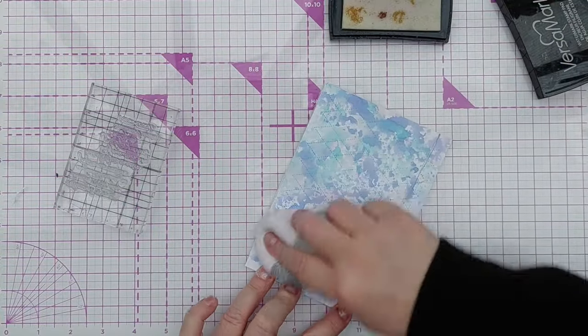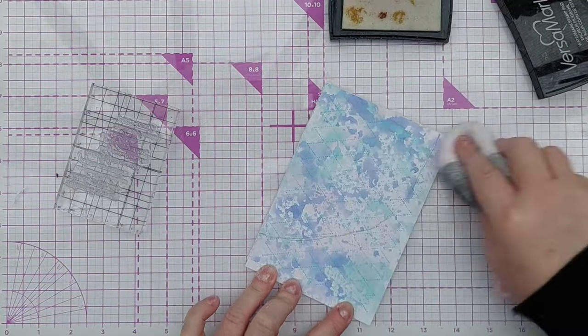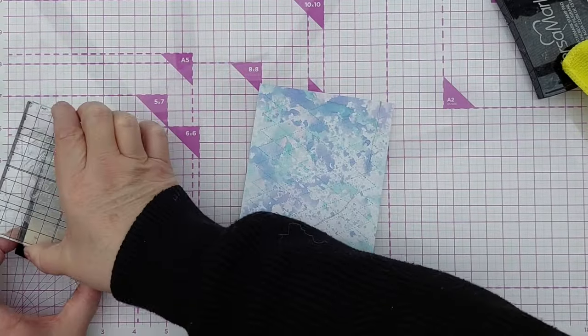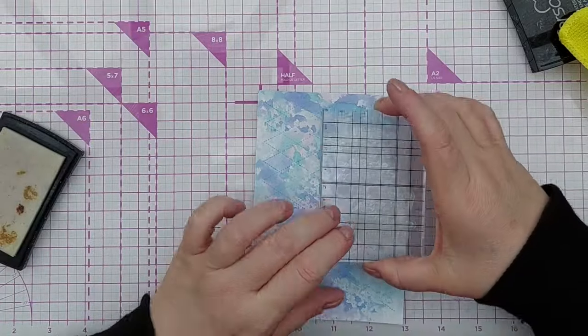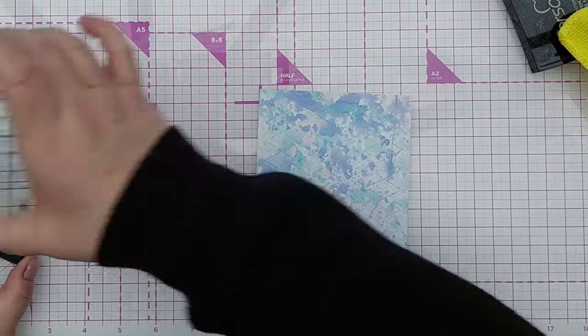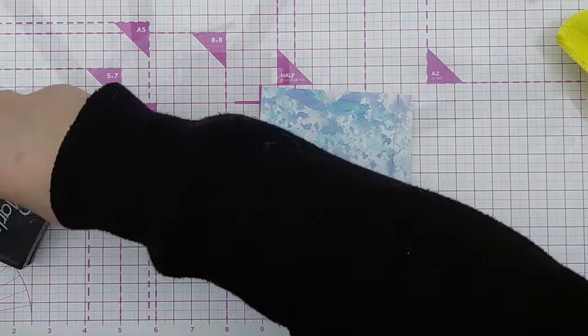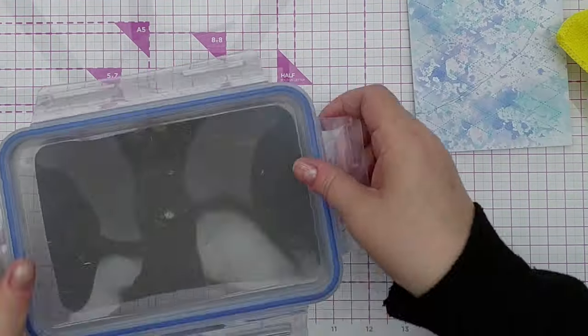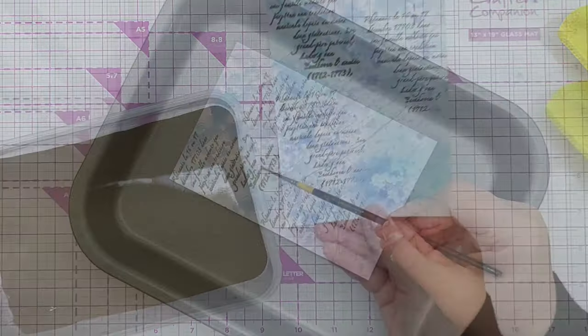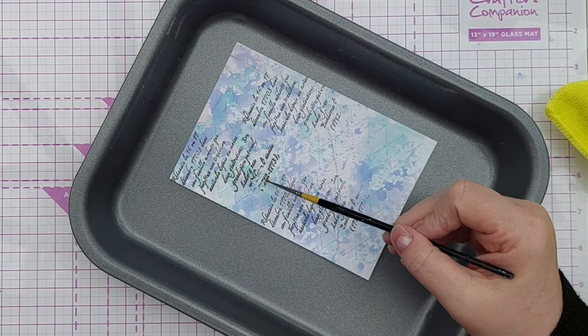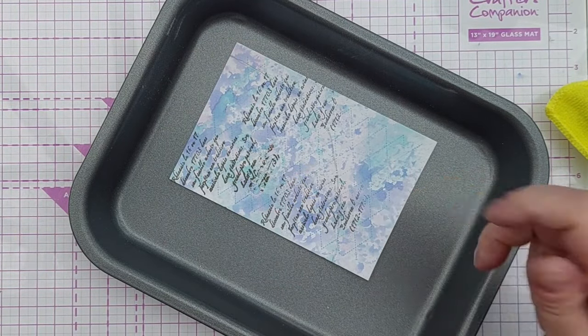So I did my usual thing of prepping my paper or my card with anti-static powder, aka cornflower. And then I took a scripty font stamp and stamped that on using Versamark ink. I then dipped the panel in my bright gold detail embossing powder and heated it with my heat tool in my little baking tray.